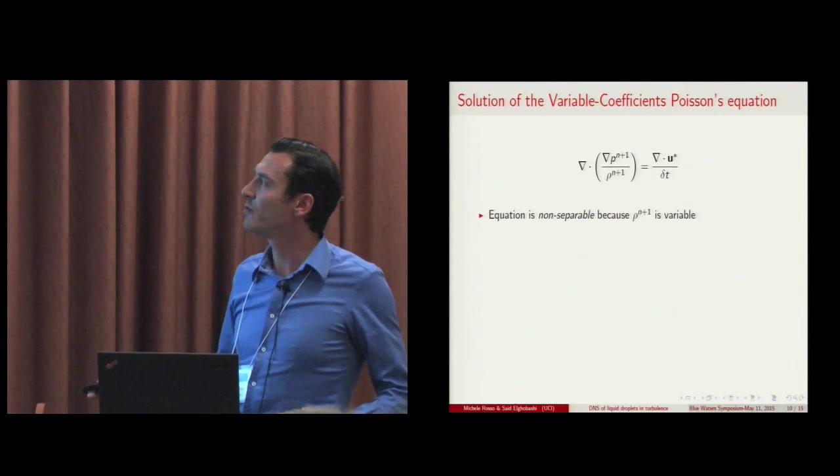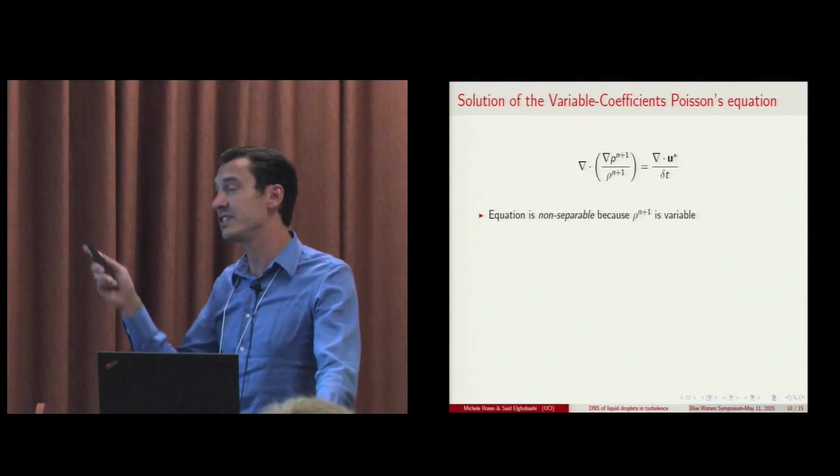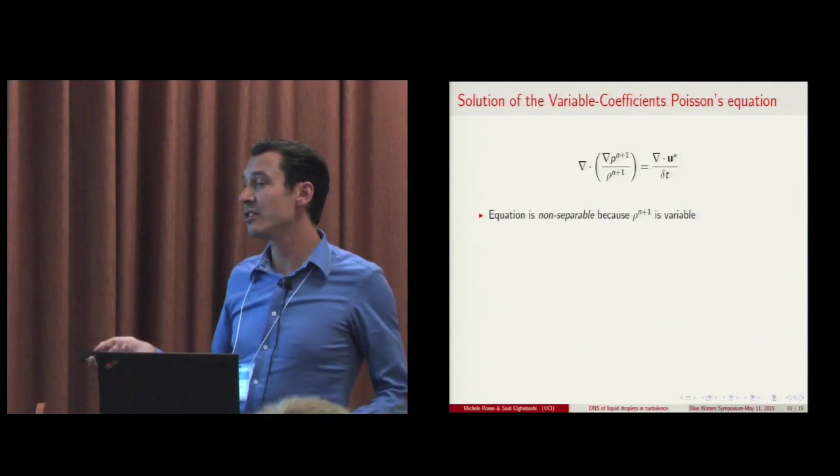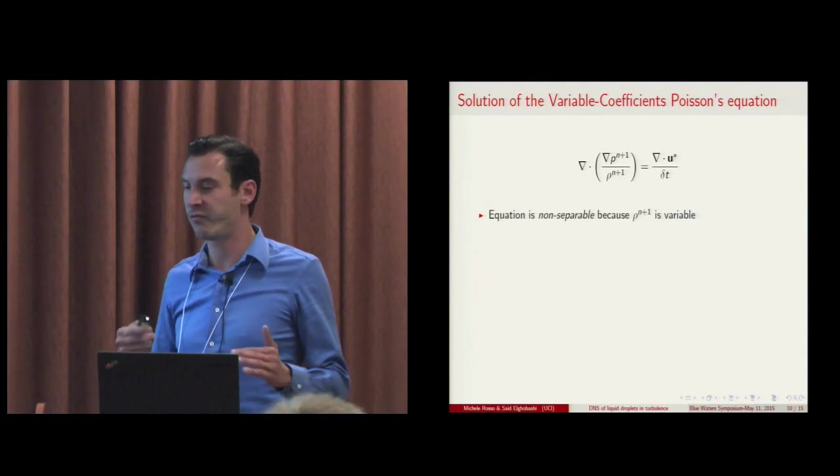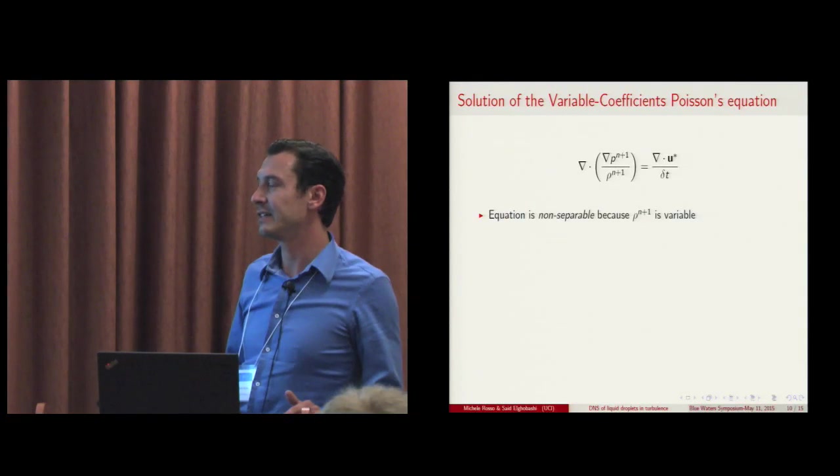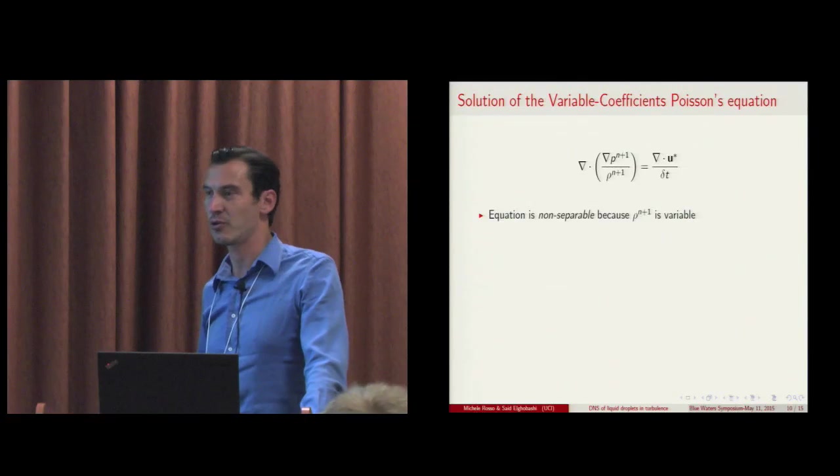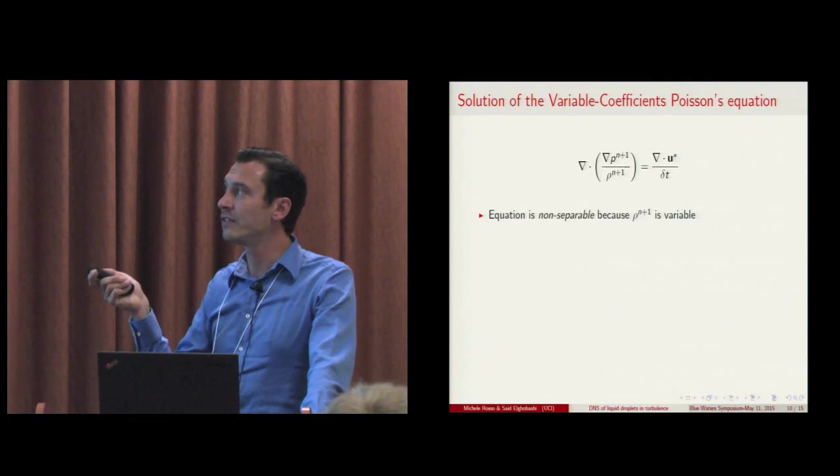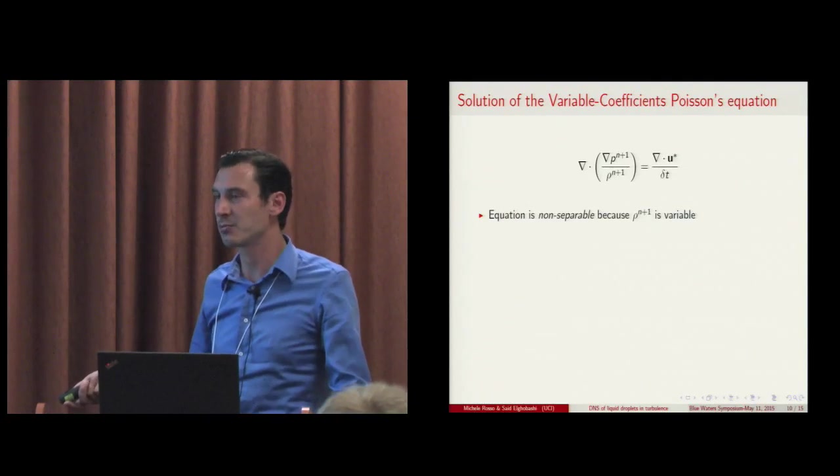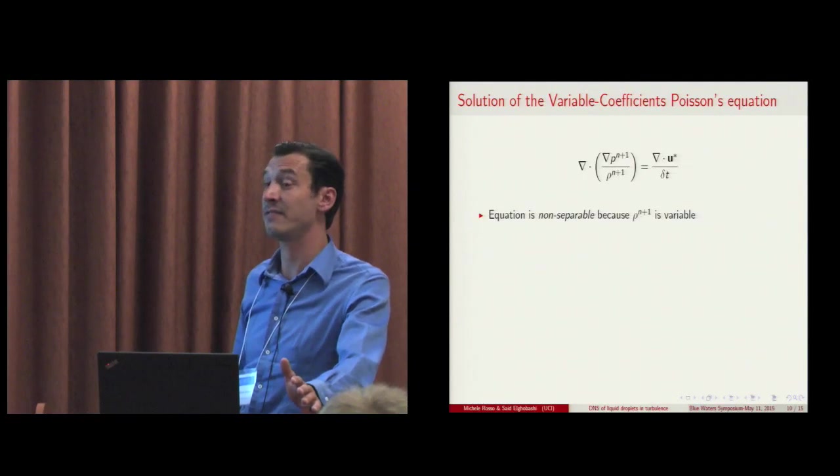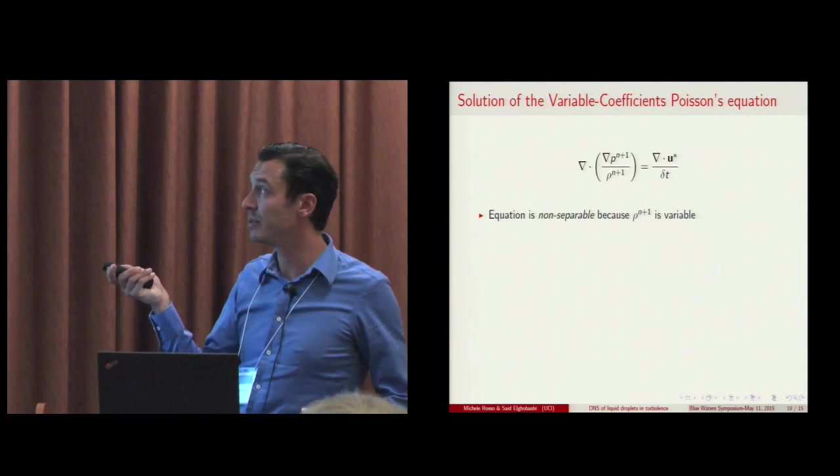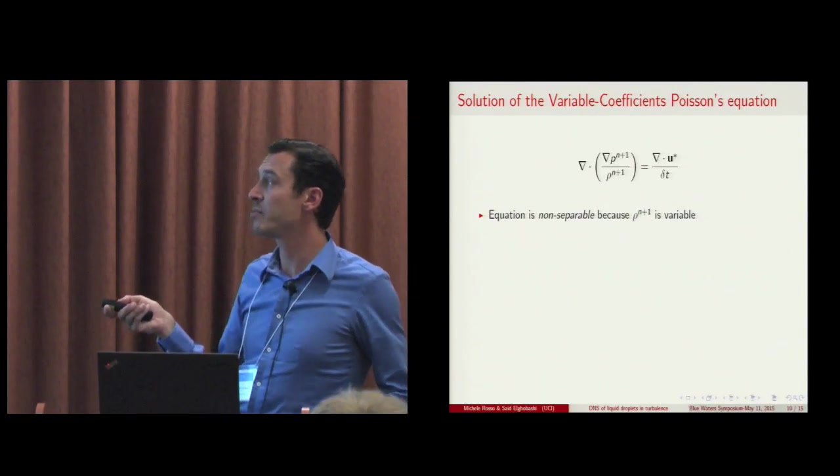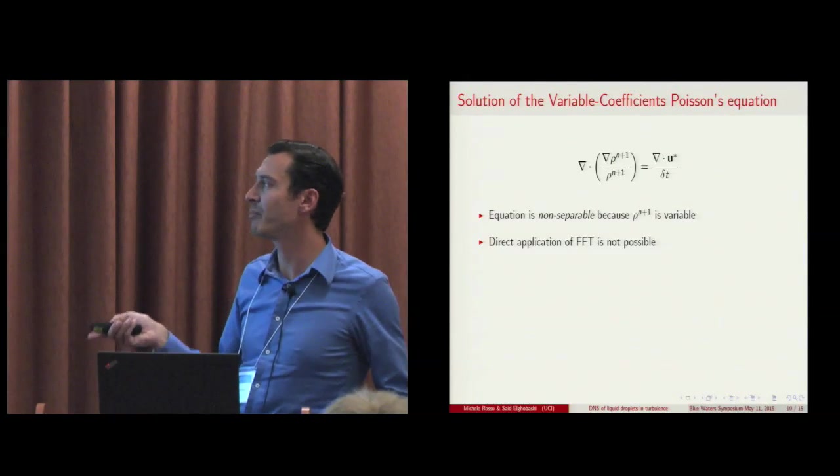Now, this variable coefficient Poisson equation, the solution of this equation is the most time-consuming part of the whole algorithm. In general, DNS for both single phase and multiphase flow is slowed down by the solution of the Poisson equation. For single phase flow, though, the density is a constant, so this equation reduces to a standard Poisson equation and a direct solution is feasible via FFT. In our case, this is not possible because rho now depends upon space. So we have a non-separable equation and therefore we cannot apply directly FFT.